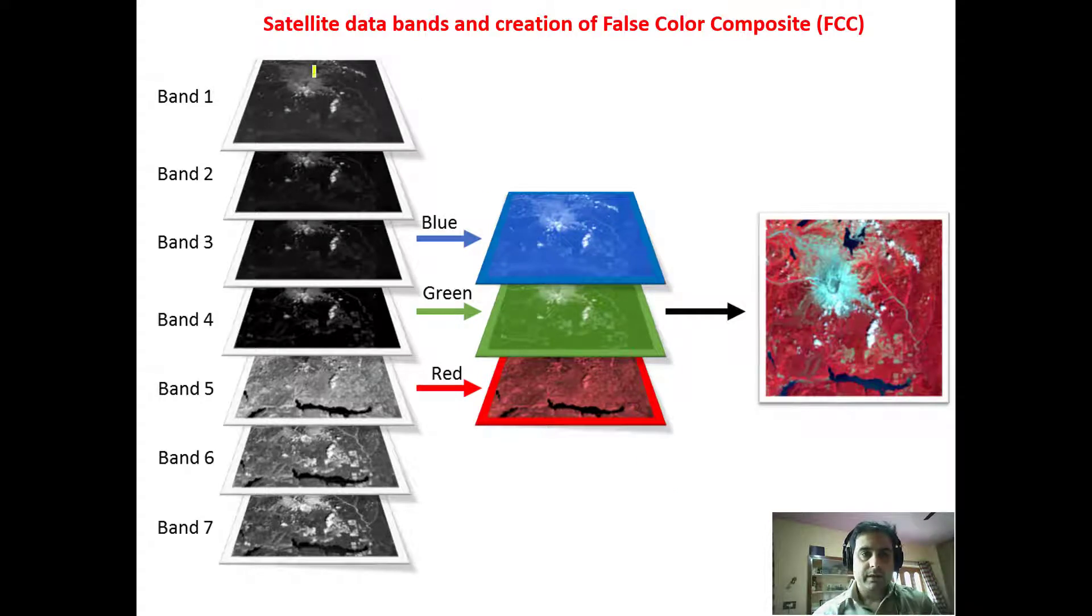Welcome back. Now we try to understand satellite data bands and creation of false color composites. In the previous lectures we understood that satellite data is composed of different bands. It may be multispectral or hyperspectral. In case of multispectral bands, we can have bands as many as - here it is represented as one, two, three, four, five, six, and seven bands.